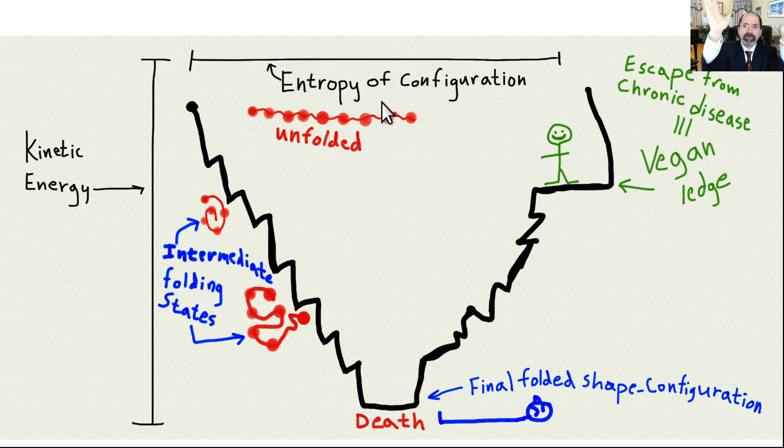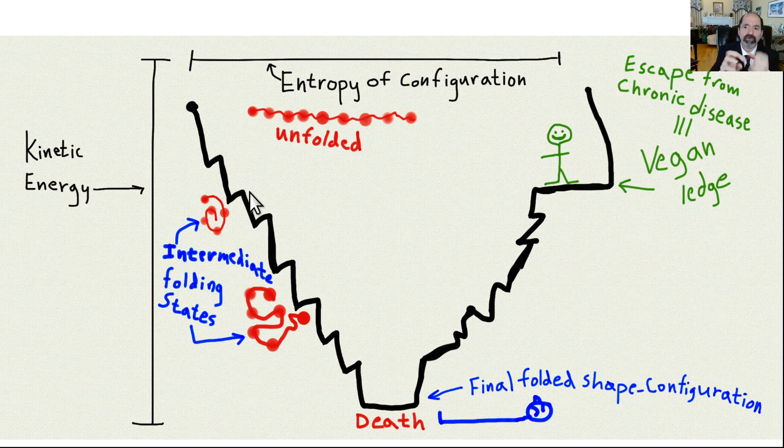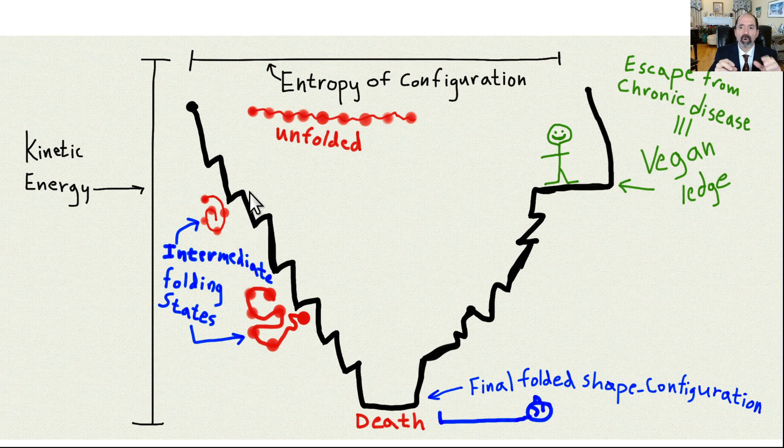You've initially got a wide open funnel at the top, and there is a high entropy. What's going to happen is it's going to start to fold, and as the protein folds, it's going to drop down into these intermediate folding states. Each time the protein takes a new fold, it is more and more committed toward its eventual final folding state.